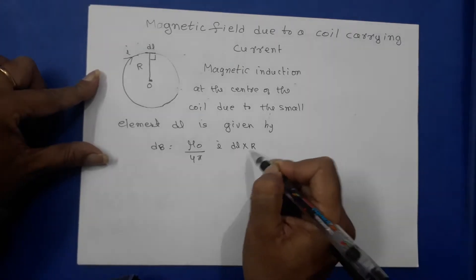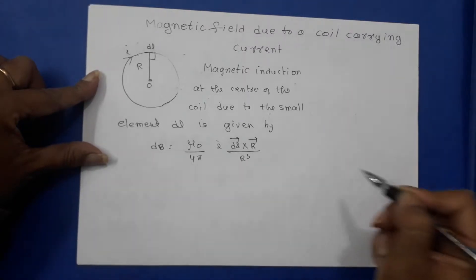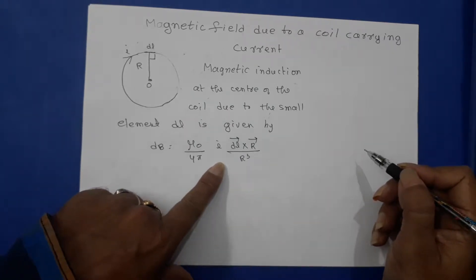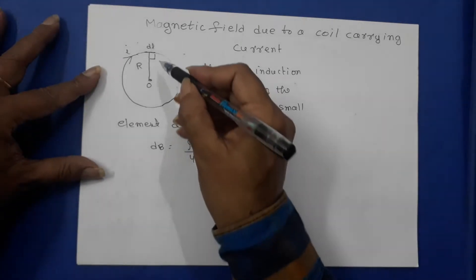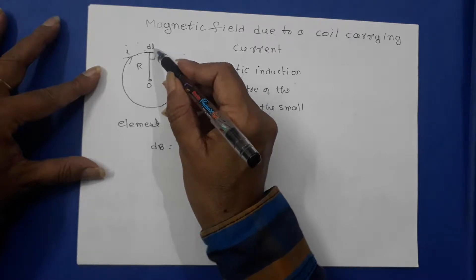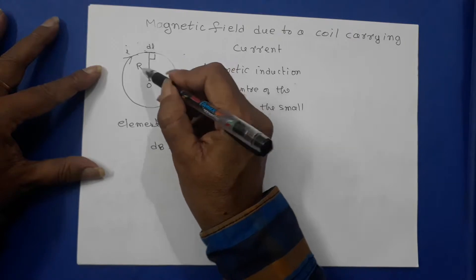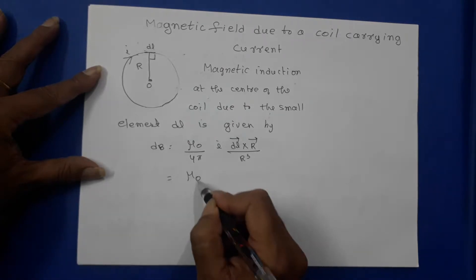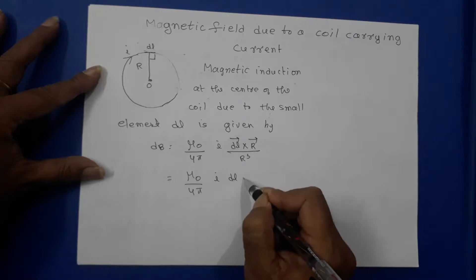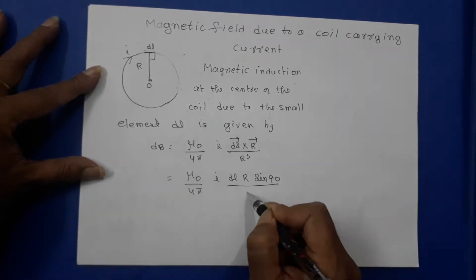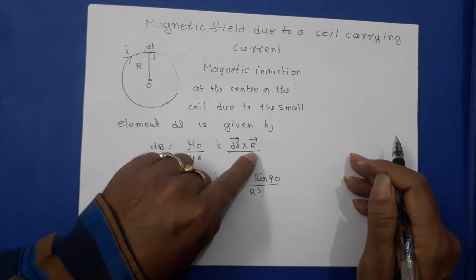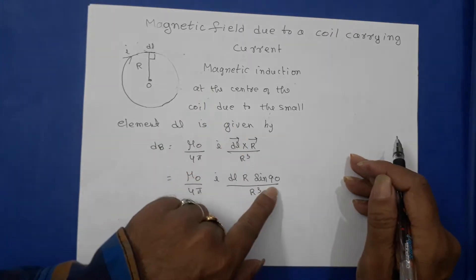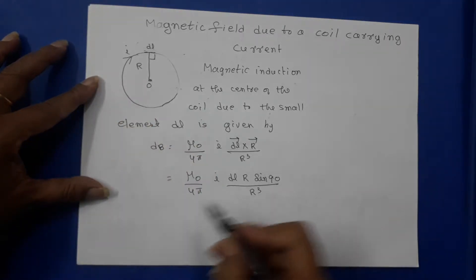The magnetic induction DB at the center due to the small element DL is given by: DB = μ₀/4π · I · (DL̄ × R̄) / R³. This is the vector form of the Biot-Savart law. Now, DL is along the tangent and R is the radius vector, so the angle between R and DL is 90 degrees. Therefore DB = μ₀/4π · I · DL · R · sin90° / R³. The cross product |DL̄ × R̄| = |DL| · |R| · sin90° / R³.